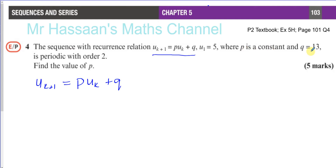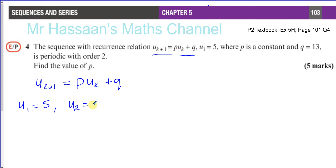They told us Q equals 13, so we replace Q with 13, and P is what we have to find. U1 equals 5, and U2 is going to be P times U1, which is P times 5 plus 13. Therefore, U2 equals 5P + 13.